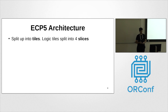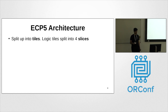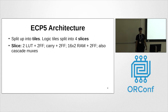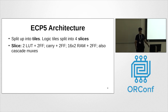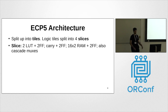Like most FPGA architectures, the ECP5 is split up into tiles — a grid of tiles. Logic tiles are split into 4 slices. In the ECP5, a slice is 2 lookup tables and 2 flip-flops, or it can be used as an adder with carry and 2 flip-flops. There's also a special mode where the lookup table can be used as RAM, and there are cascade muxes to build larger lookup tables inside the slice.